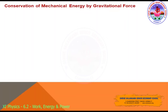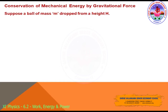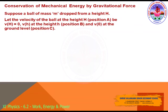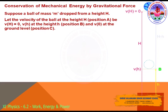From the law of conservation of energy, we will now look at conservation of mechanical energy under gravitational force through the example of a freely falling body. Suppose a ball of mass m is dropped from height H. We take position A at height H, position B at some intermediate height h, and position C at the ground level. We will examine the mechanical energy at each position.